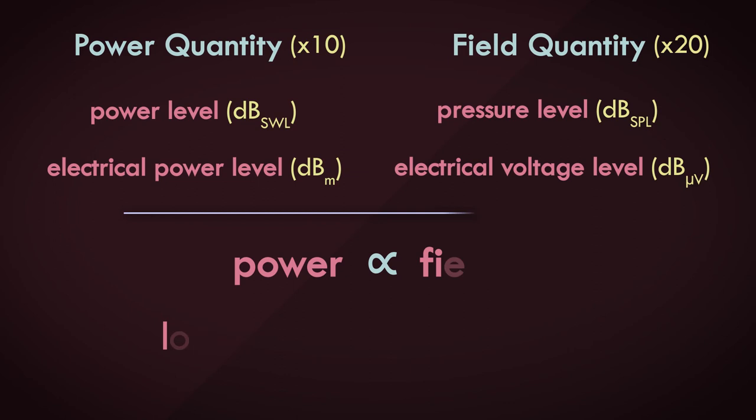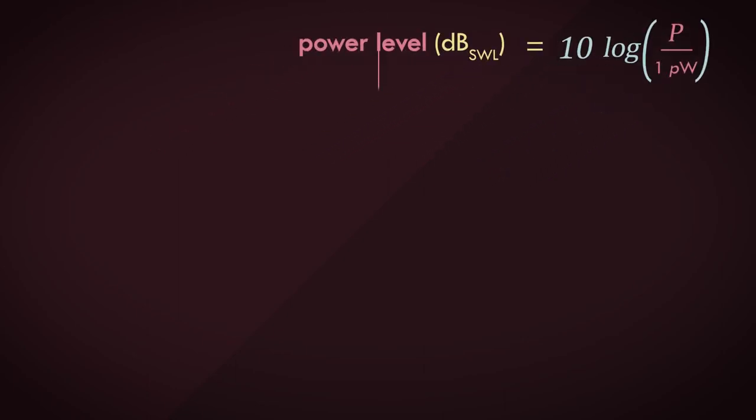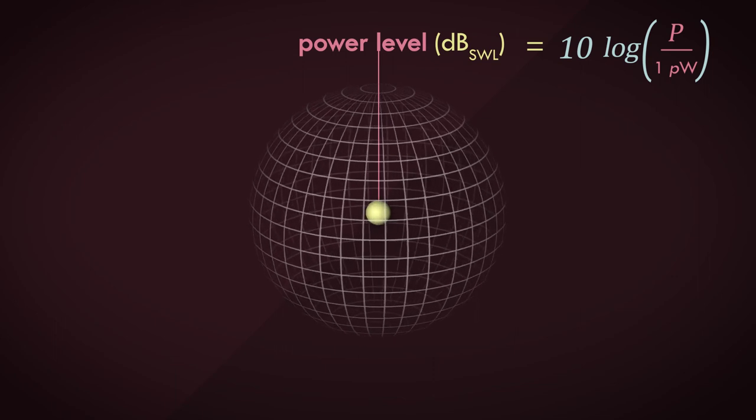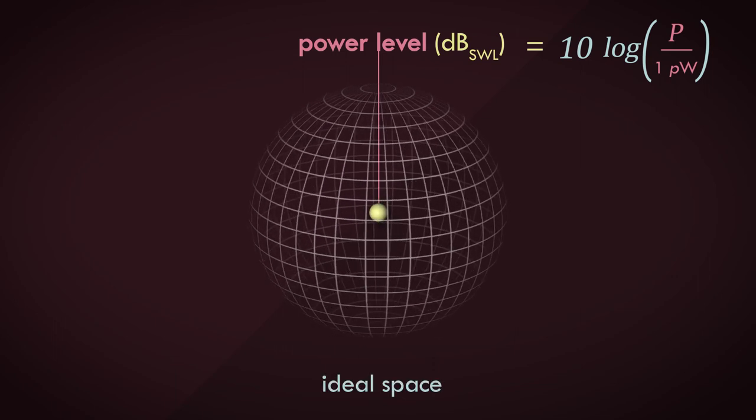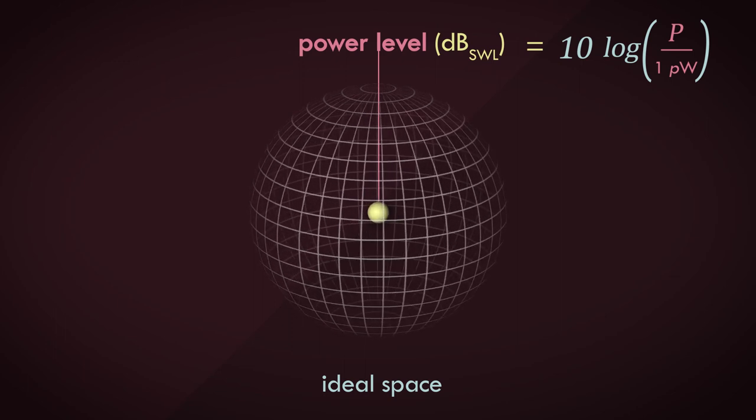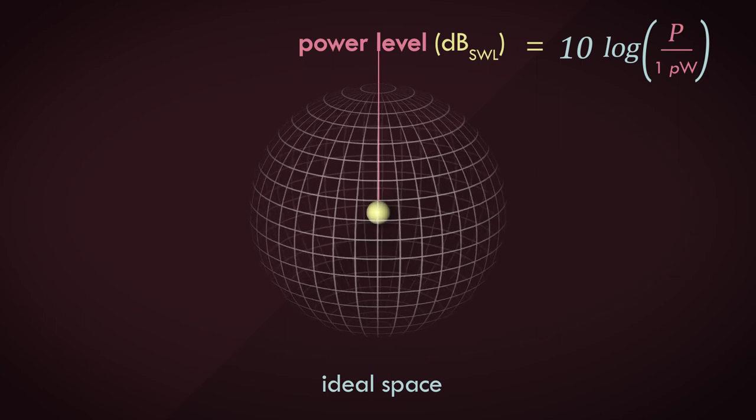So previously I mentioned that by knowing the sound power of a source, you can theoretically calculate the sound pressure caused by it at a distance. I say theoretically because the formula assumes an ideal space where the source is suspended in mid-air with no primary or secondary reflections of any kind. In the real world, these sort of spaces are hard to come by, but engineers make clever modifications to the formula to fit the space being measured.